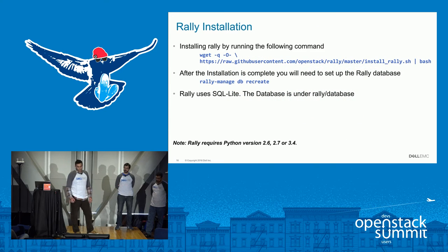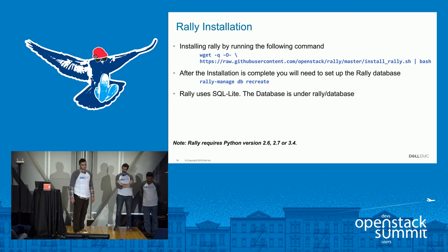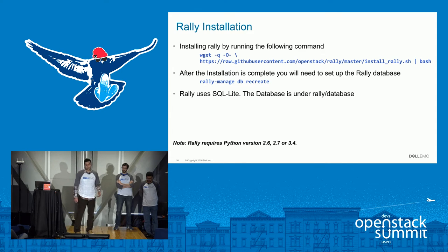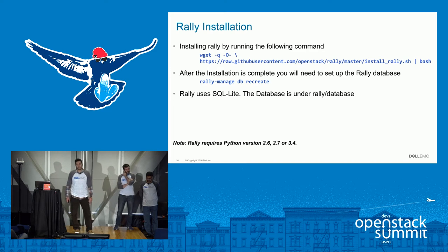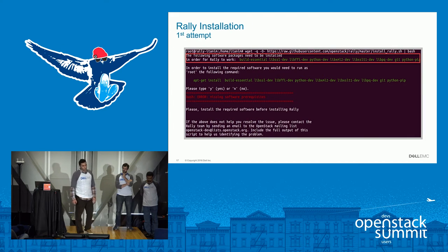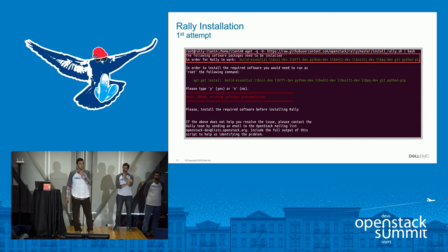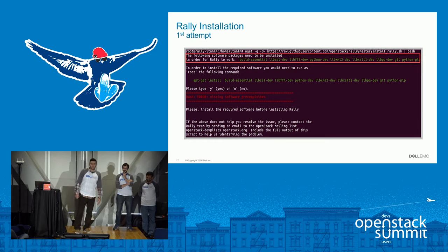First step: installing Rally. You can install Rally by downloading the installer script install_rally.sh from the Rally repository and running it on your bash shell. After the installation is complete, you run 'rally manage db create', which will create your SQLite database for Rally. How many of you have already installed Rally? A few hands. How many of you had some challenges during installing Rally?